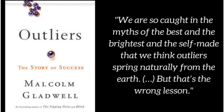Chapter 5: The Three Lessons of Joe Flom. In Chapter 5 of Outliers, Malcolm Gladwell explores the concept of cultural legacies and how they influence an individual's path to success. He illustrates this through the life story of Joe Flom, a highly successful lawyer who rose to prominence on Wall Street. Born into a working-class Jewish immigrant family in the early 20th century, Flom's background was marked by adversity, discrimination, and limited access to opportunities. Yet Gladwell argues that Flom's cultural legacy played a significant role in shaping his approach to life and work.